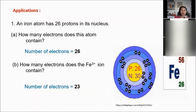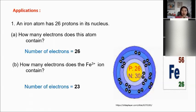If we have Cl⁻ (chlorine ion), that means chlorine received one electron. So a neutral chlorine atom gains one electron, becoming a negative ion — Cl⁻ — after receiving one electron from another atom such as sodium.